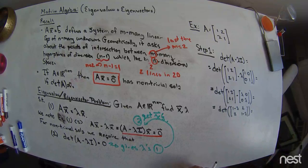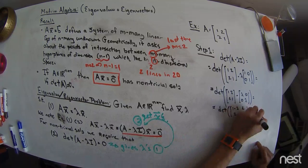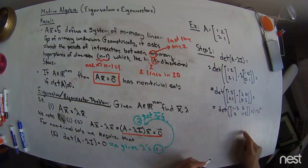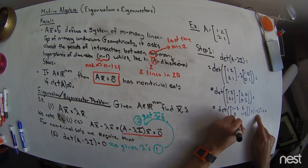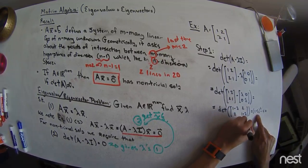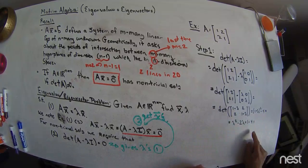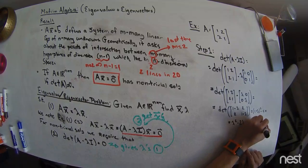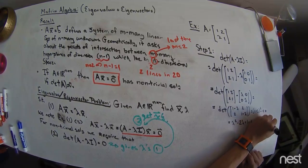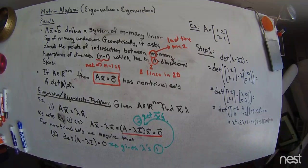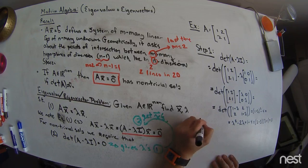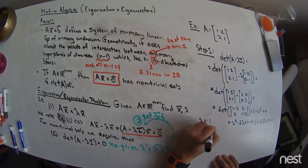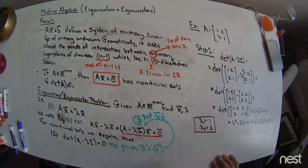And now, I calculate my determinant, which is going to be upper left times lower right. So, I get 1 minus lambda quantity squared minus lower left times upper right. So, that's going to be minus a 4, and so that's going to be equal to lambda squared minus 2 lambda plus 1 minus 4. And so, this should factor into lambda minus 3 times lambda plus 1 is 0. So, lambda 1 is equal to negative 1, and lambda 2 is equal to 3.